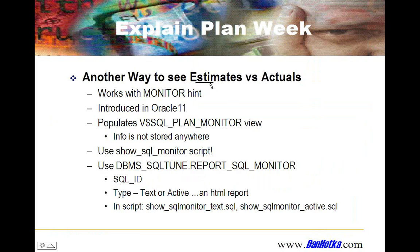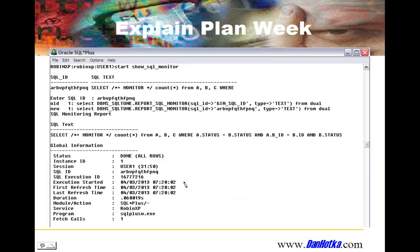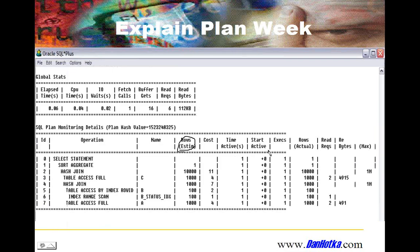Another way to look at estimated versus actual rows — and I believe this is the technology that Enterprise Manager uses — requires the Enterprise Manager Diagnostics Pack to use; it's not free syntax. You use the monitor hint, which populates a table, and then use the DBMS_SQLTUNE package to display the information in useful formats. It gives you a lot of useful information — most importantly the estimated rows versus actual rows — and a lot more. I would just use Enterprise Manager perhaps, but you can use this technology to write something of your own.